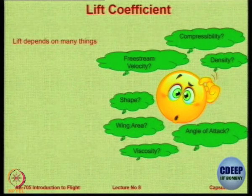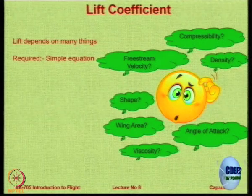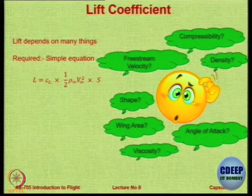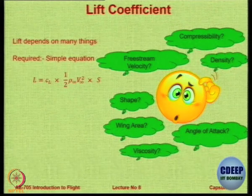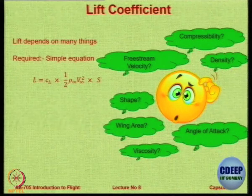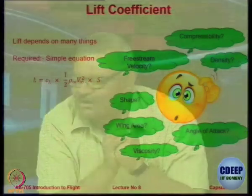To take care of all the important things, we want a simple equation that captures the essence. We have this equation which says that lift is a function of the density of the fluid, the velocity, the area, and a coefficient called Cl — the lift coefficient — which relates the numerical value of lift with parameters like area, velocity, and density that directly affect lift.